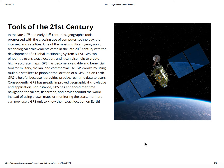21st century geographer tools progress with the growing use of computer technology, the internet, and satellites. One of the most significant geography technology achievements came in the late 20th century when the development of the GPS system came into play, pinpointing the user's exact location. It used to be a military tool, but now it is a civilian tool. It also helps people in the maritime world — navigation for sailors and fishermen. It pinpoints your location anywhere in the world with the press of a button, as long as you can connect to the satellite or the internet.